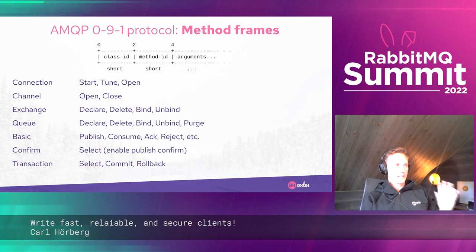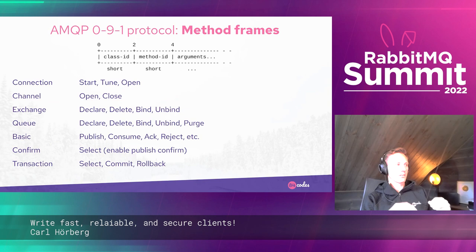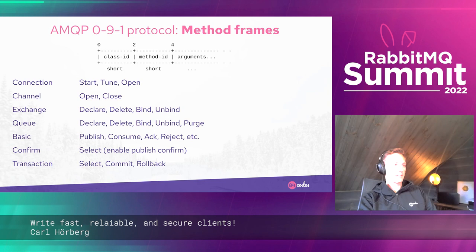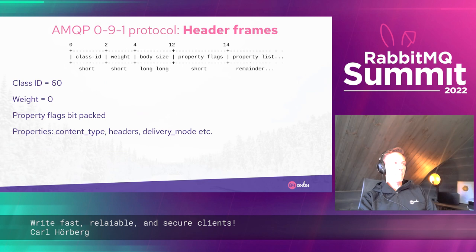Method frame payloads always start with the class ID and the method ID. There are many methods in the AMQP protocol — things like channel open, channel close, exchange declare, queue delete — all grouped into classes. Each class and method has an ID, and in the specification you can read how the arguments are encoded. For instance, for queue declare you append the queue name and a few other things.